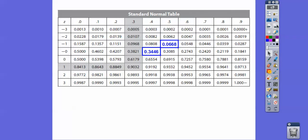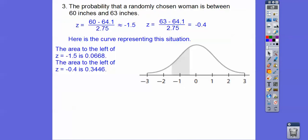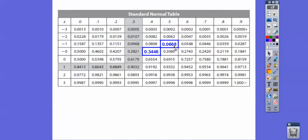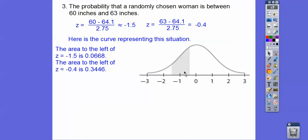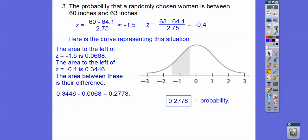All right, so we get those two numbers right there, and then the area to the left of negative 1.5 is this number right here, and the area to the left of negative 0.4 is that number there. So what we're going to do is this area here is this number, and then this area from here all the way over is this number. So to get this part right here, we just subtract those two, and we get about 0.2778. And probability is a fraction answer or a decimal answer. So unless it asks for percent, then probability is your decimal answer.